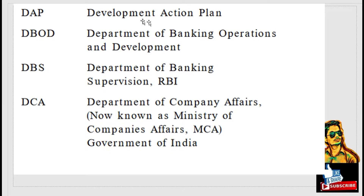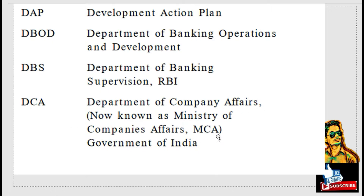DAP: Development Action Plan. DBS: Department of Banking Operations and Development. DBS: Department of Banking Supervision. DCA: Department of Company Affairs, now known as Ministry of Companies Affairs MCA, Government of India.